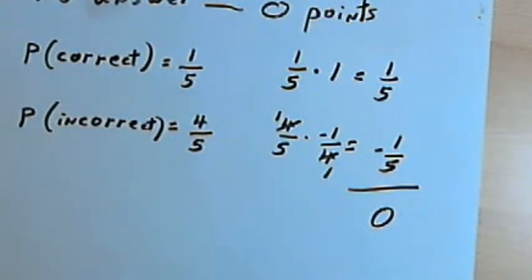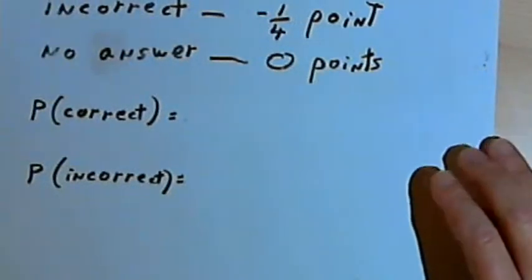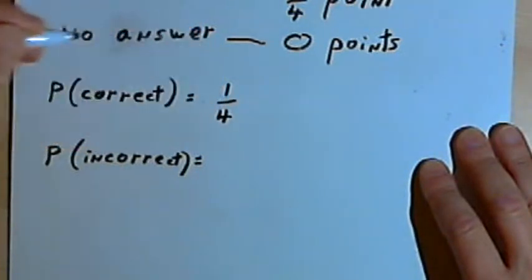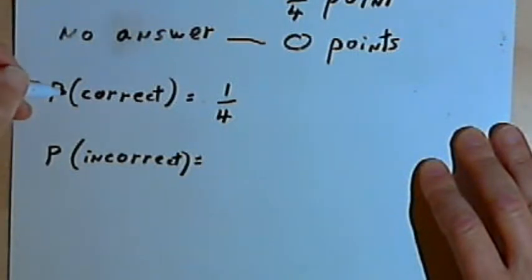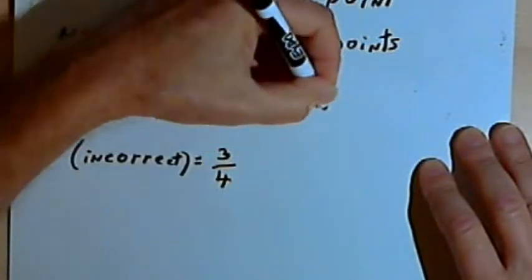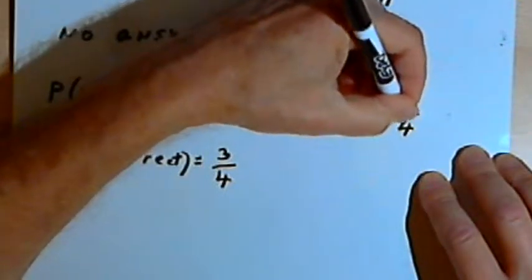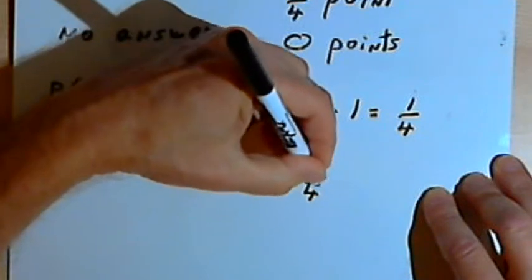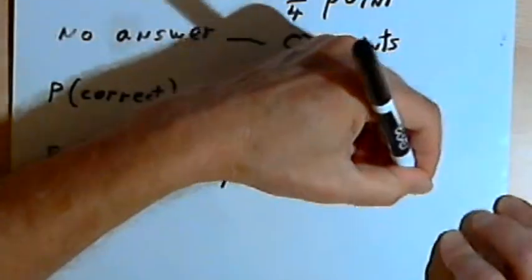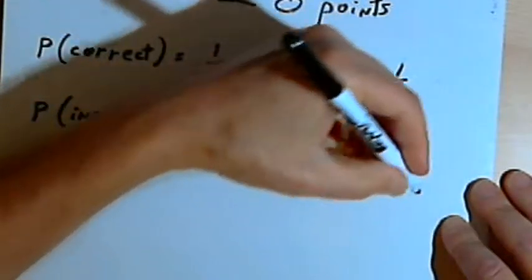Now let's see what happens if you can rule out one of the answers as obviously incorrect. Instead of guessing from five possible answers, you know one answer is wrong. So you have a one-in-four probability of getting the correct answer, and a three-in-four probability of getting a wrong answer. We multiply one-fourth times one for a correct answer, giving one-fourth. Then three-fourths times negative one-quarter gives negative three-sixteenths.